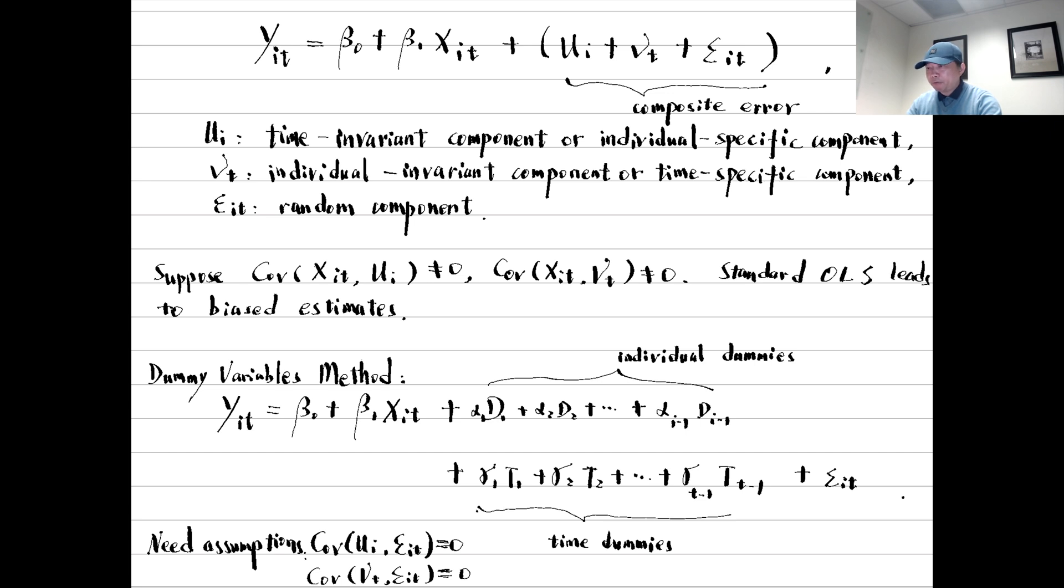The idea of the dummy-variables method is to estimate the individual-fixed effects and the time-fixed effects directly, along with the coefficients of the explanatory variables, beta. We use the individual-dummies to capture the individual-fixed effects and the time-dummies to capture the time-fixed effects.